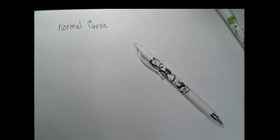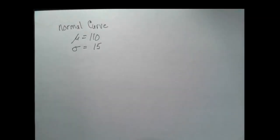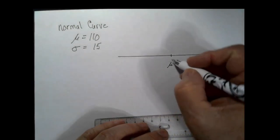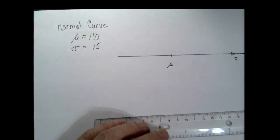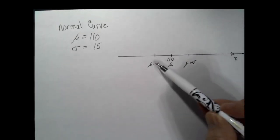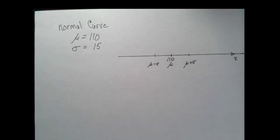In this video, we're going to sketch a normal curve. Consider the example where the mean is 110 and the standard deviation is 15. On the x-axis, plot the mean, which is 110. Also plot the mean plus a standard deviation and the mean minus a standard deviation.